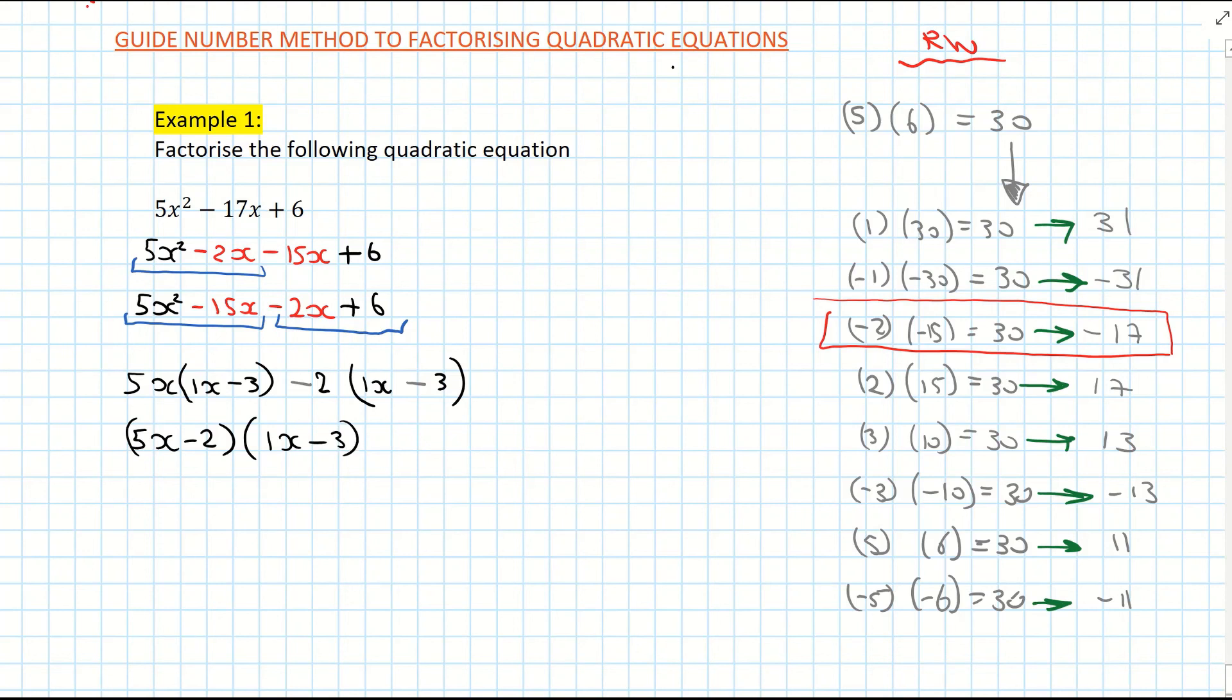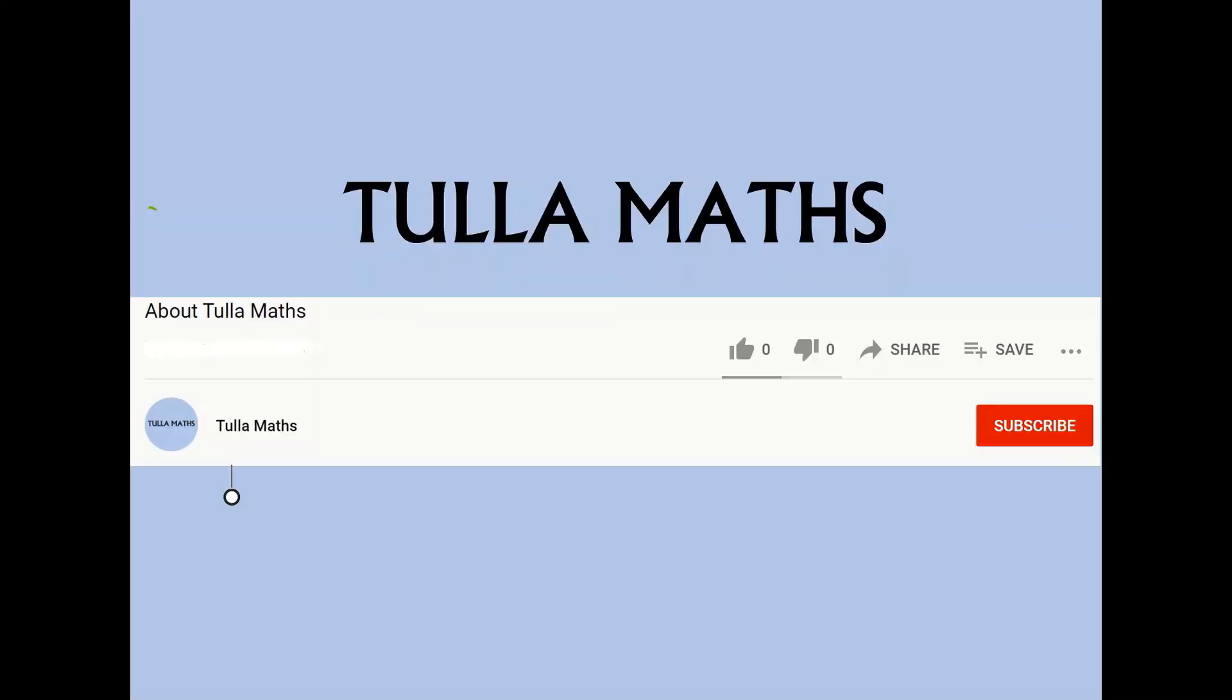And that's your answer. You've now factorized the quadratic equation using the guide number method. If you want to check your answer, you should go and multiply out or expand your brackets. But that's the guide number method. Thank you for watching another tutorial video from Tullamaths. Make sure and subscribe.